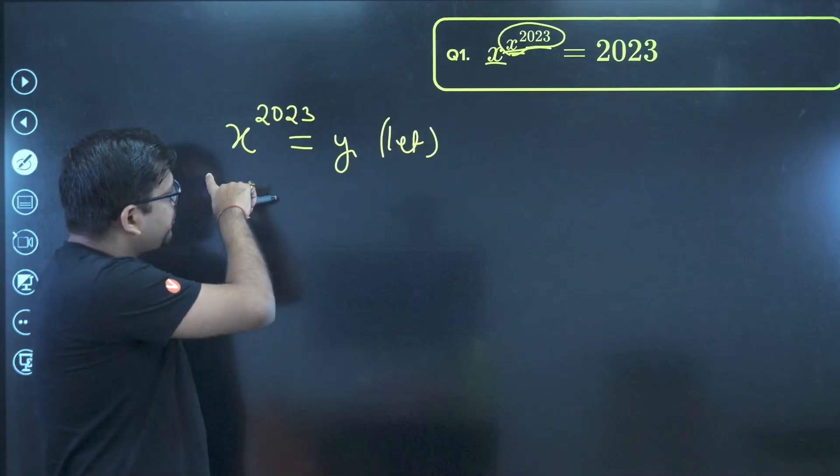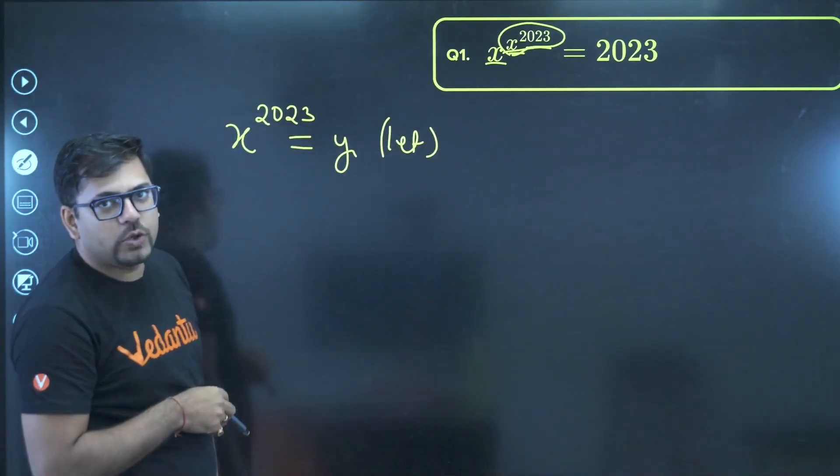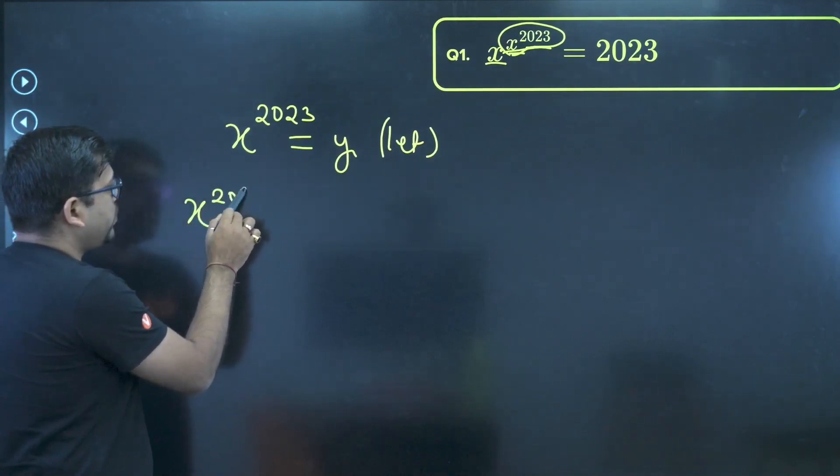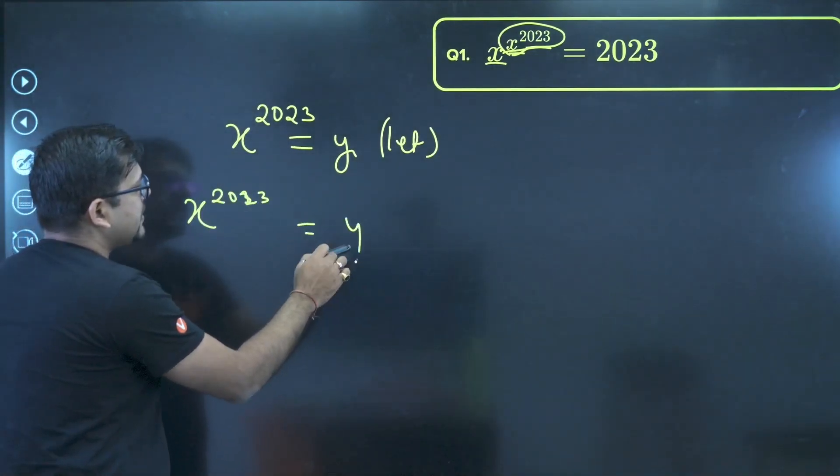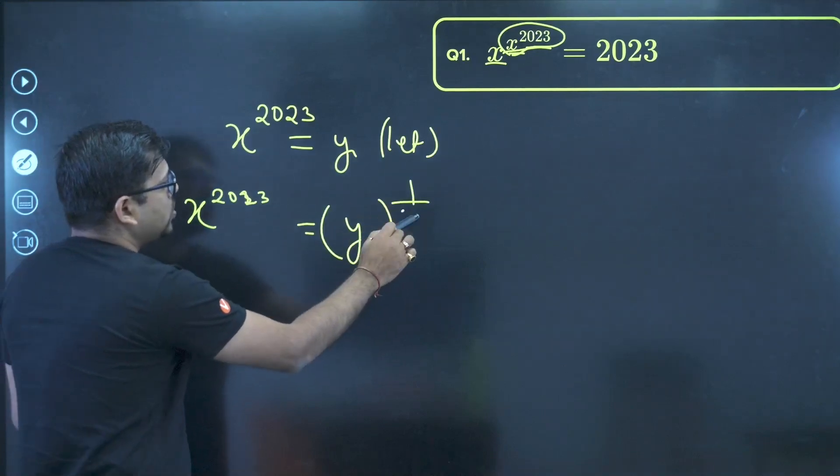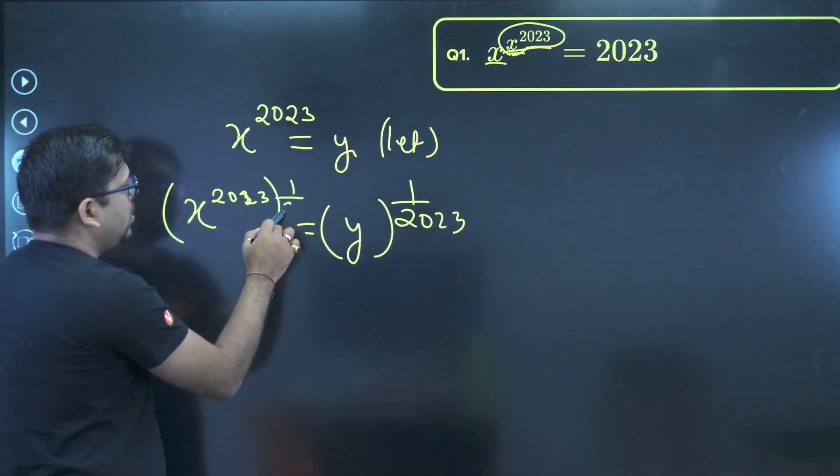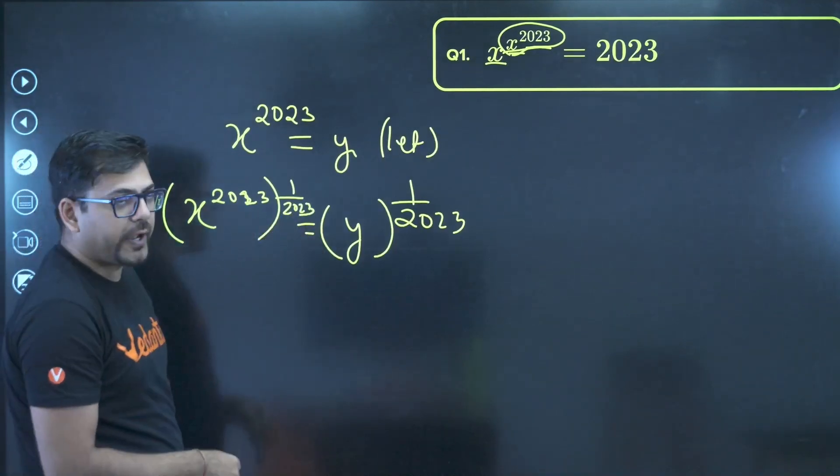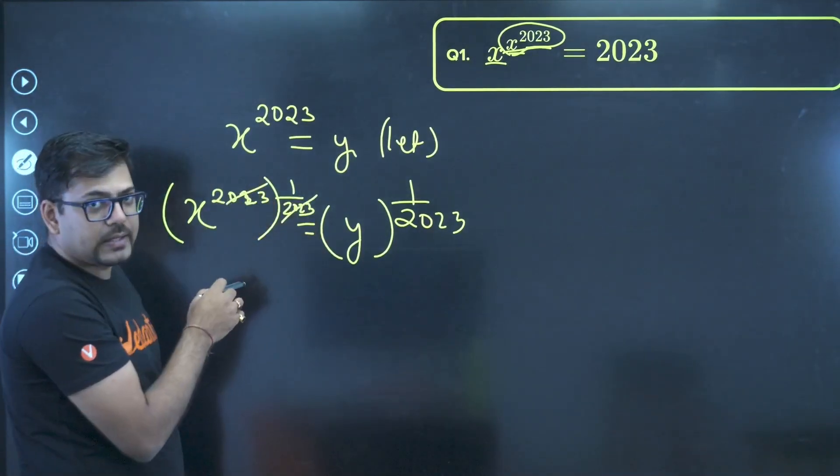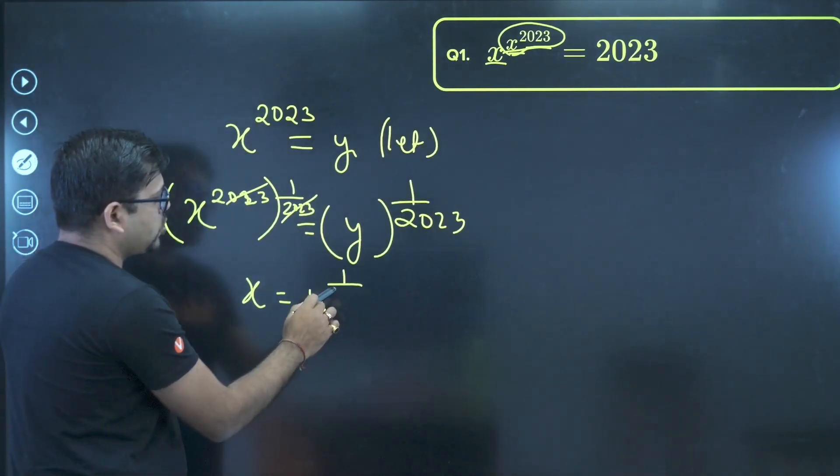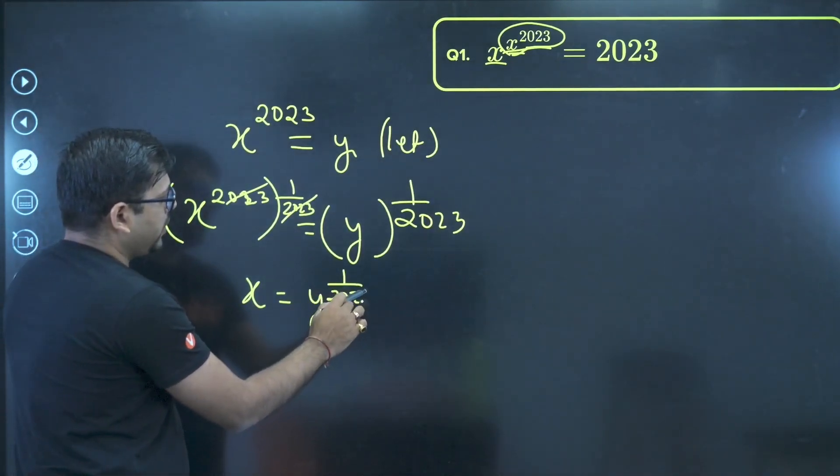I know that from here I can even get the value of x. How? I can take power both sides as 1 upon 2023. Here also 1 upon 2023. So this and this gets cancelled. We have got our x and here we have got y raised to power 1 upon 2023.